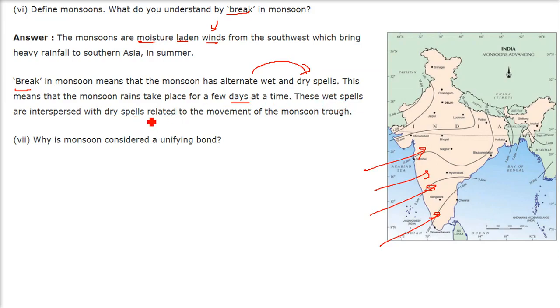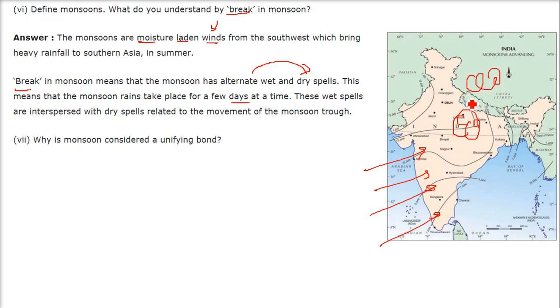The monsoon trough sometimes moves to one position, sometimes another. When it shifts position it can lead to snowfall in some areas. It keeps changing its position, causing these alternating wet and dry spells.